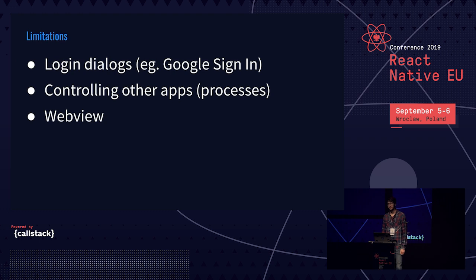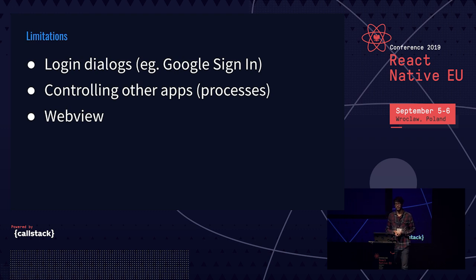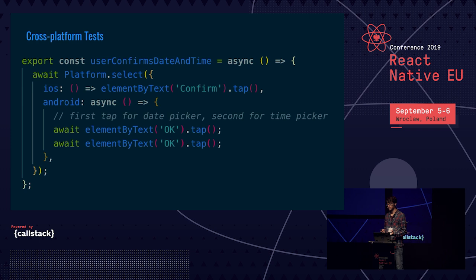There are some limitations. I maintain the React Native Google Sign-in repo and wanted to write end-to-end tests for it. I found that when you tap the Google Sign-in button, it shows a dialog that is just not visible to Detox — Detox cannot control other apps or processes, and that sign-in modal comes from a different process. This also applies to WebView, and there are probably more limitations. For cross-platform tests, you can write your own platform.select for end-to-end tests to describe which code should execute on which platform.